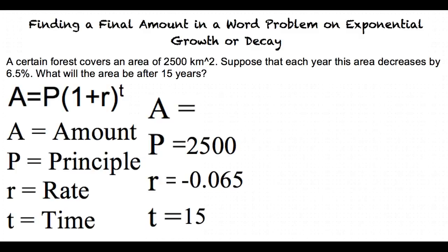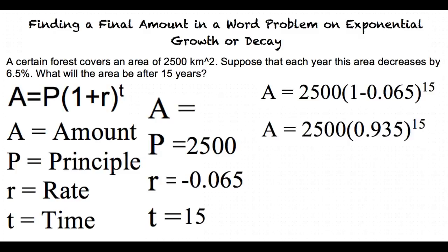Now we substitute our numbers in for the variables and solve for A. Our equation will look like A is equal to 2500 times 1 minus 0.065 to the 15th power. Now we solve using a calculator.